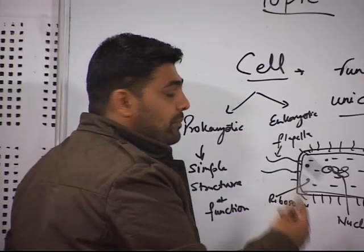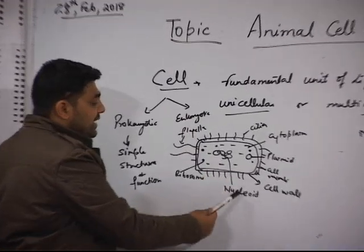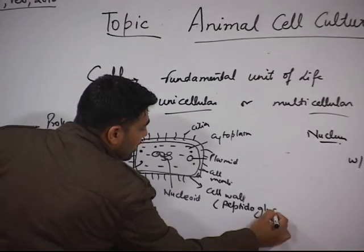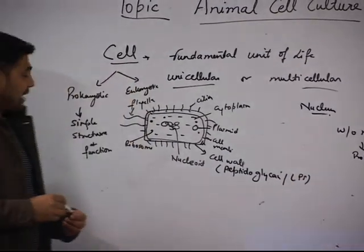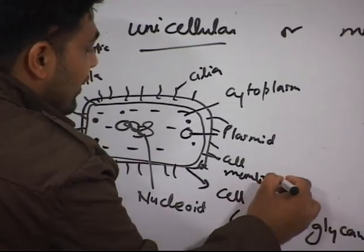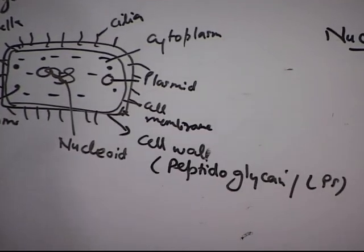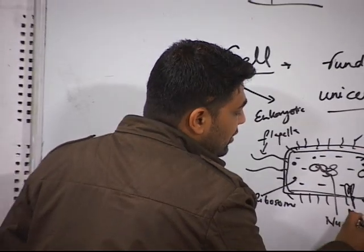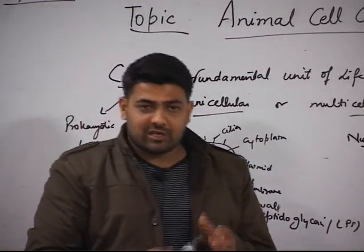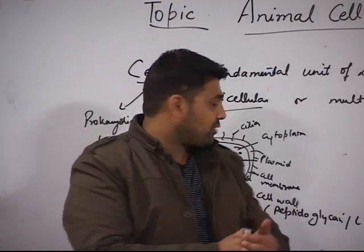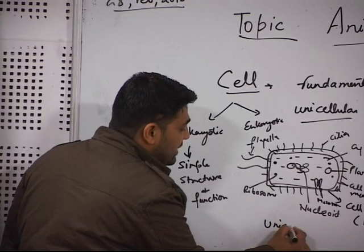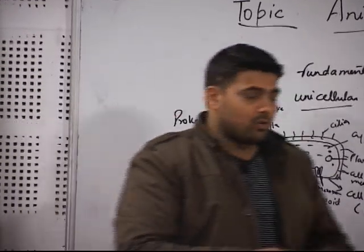In the prokaryotic cell, membrane-bound organelles are absent. The DNA is present as naked without a membrane. The cell wall is primarily made up of peptidoglycan or LPS depending on the type of organism. The cell membrane is an important structure. Plasmids provide extra benefits such as antibiotic resistance. Ribosomes serve as protein factories. Mesosomes are hubs where respiratory enzymes are trapped and most metabolic activities are carried out. Most prokaryotes are unicellular and do not occur as multicellular structures.